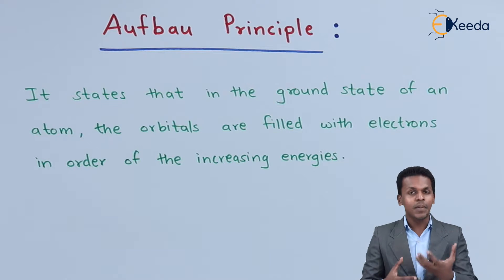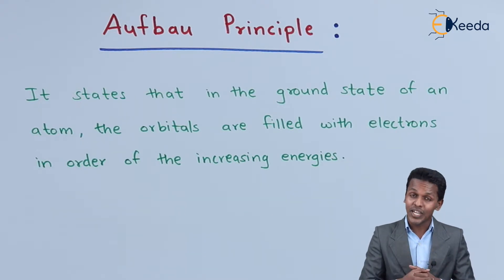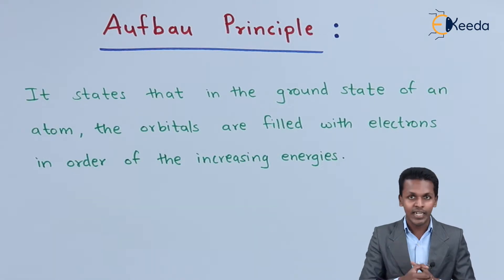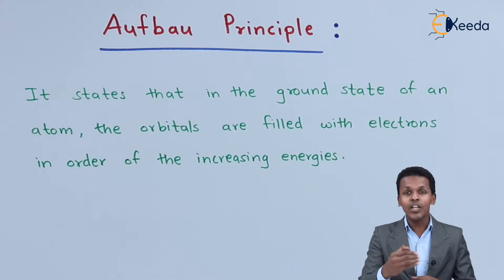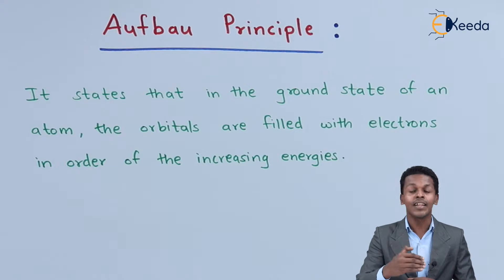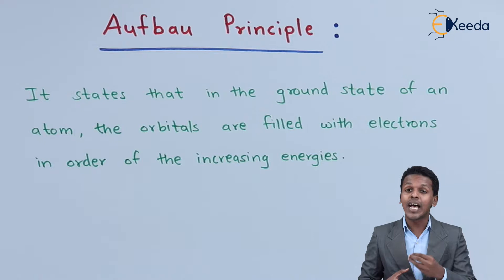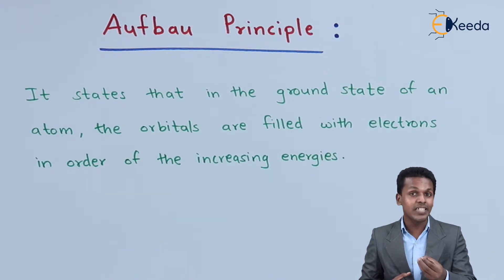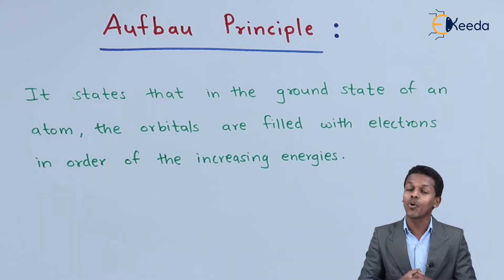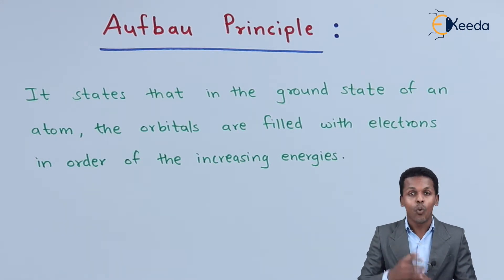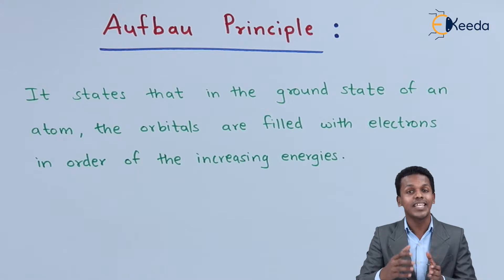As you know, an atom consists of a nucleus, and it also consists of shells, subshells, and the orbitals, and the electrons are filled in it — all the electrons are revolving around the nucleus. The filling of the electrons always starts with the first shell, then second, third, and so on. So what is the reason behind this, and in which orbitals are the electrons filled first? That is the main concern, and that is what we are going to talk about — that is our Aufbau principle.